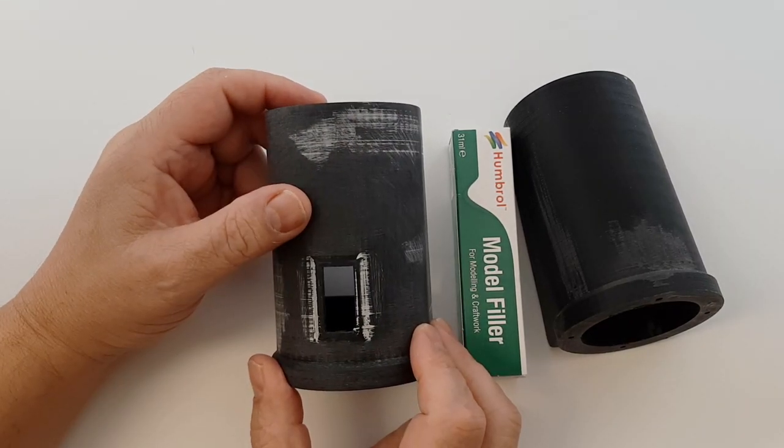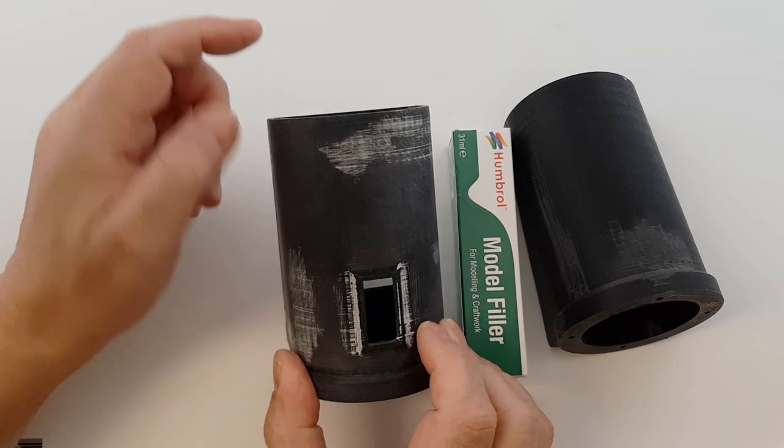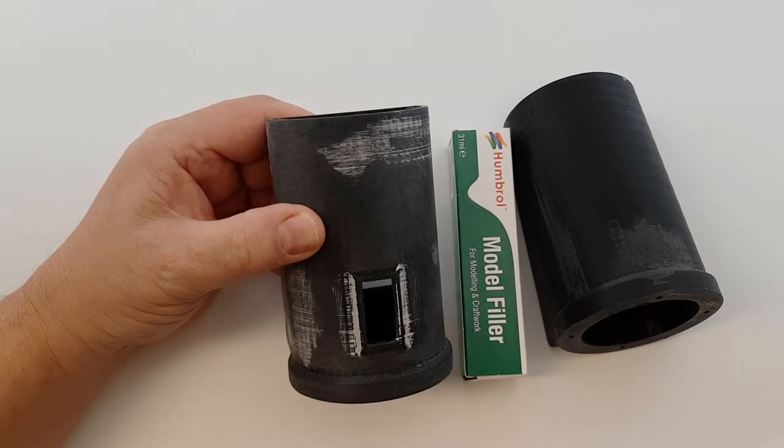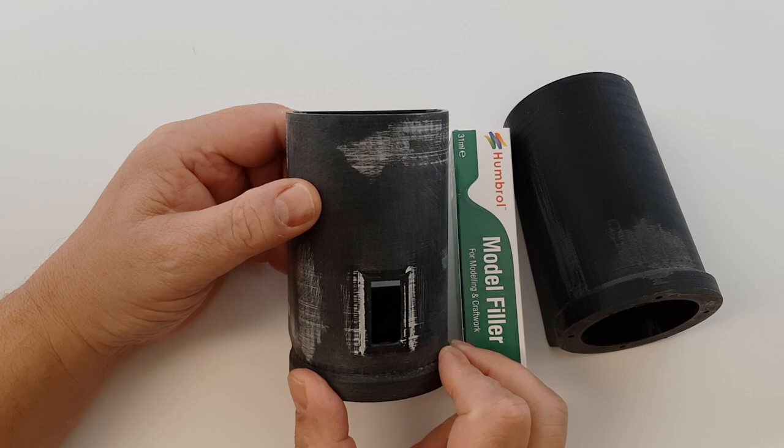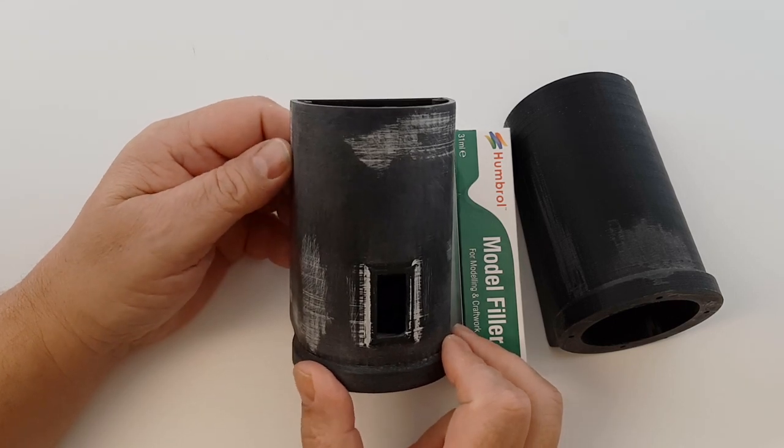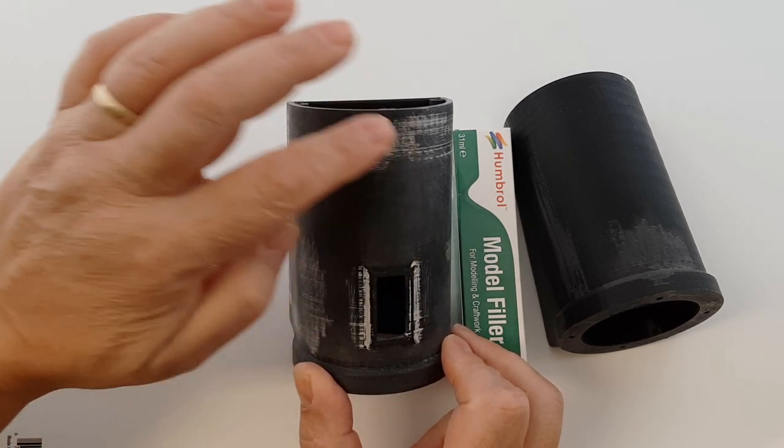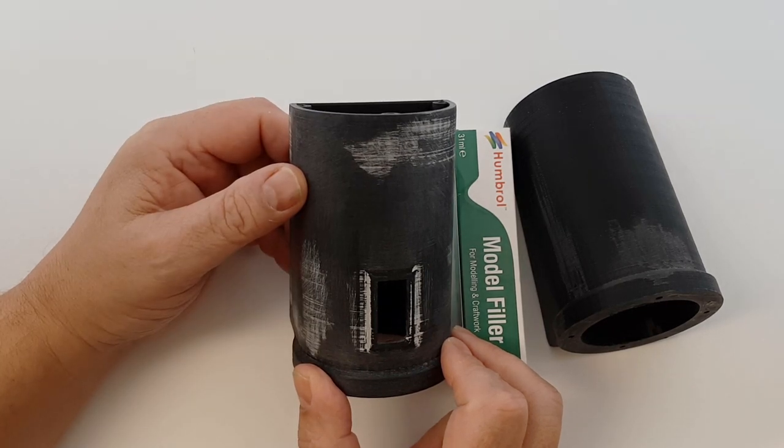Typically, when you do a 3D print, you print with an infill. And what that actually means is that the inside of the part is hollow. And on this part, I used a 30% infill, which means that 70% of the inside of this is air.